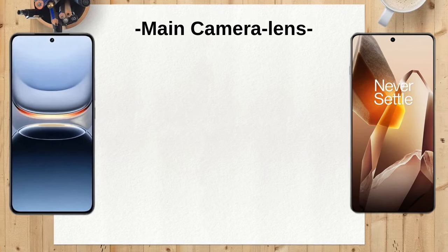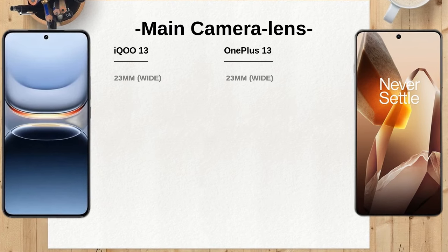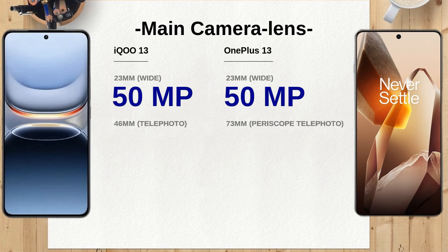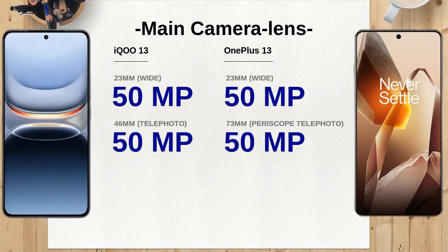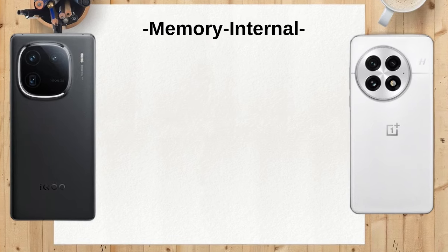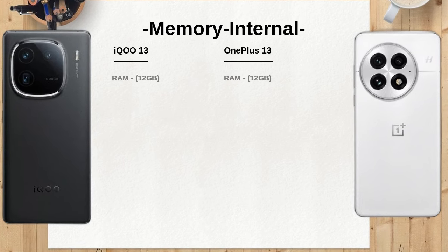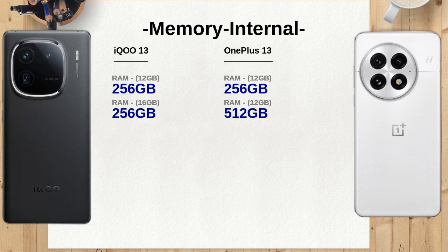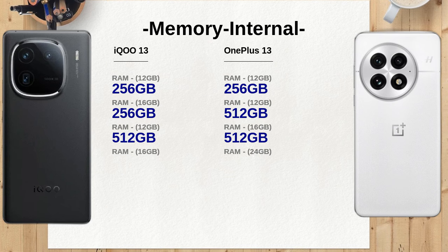Both devices feature a 6.82-inch display, providing an immersive viewing experience. However, the OnePlus 13 boasts a slightly higher screen-to-body ratio at approximately 90.7%, compared to the iQO13's 90.2%, meaning users may enjoy a more expansive display area on the OnePlus 13. Both the iQO13 and OnePlus 13 come with a stunning resolution of 1440 x 3168 pixels, ensuring crisp and vibrant visuals.